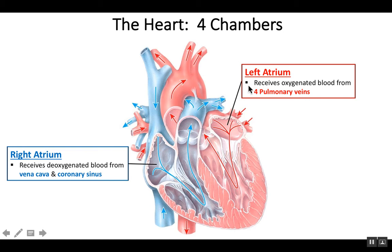The left atrium receives oxygenated blood — blood that picked up oxygen at the lungs. Blood coming from the lungs into the left atrium is carried within four pulmonary veins. You can see one located here, here, and then there are two coming from the other side. There's a lung on each side of the heart, so each lung — right and left — brings its blood toward the left atrium within these four pulmonary veins.